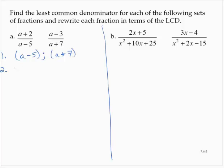Second step for the LCD: we take the highest power of each factor. So the LCD is just (a - 5) times (a + 7). We'll leave it in its factored form — there's no need to multiply that out.